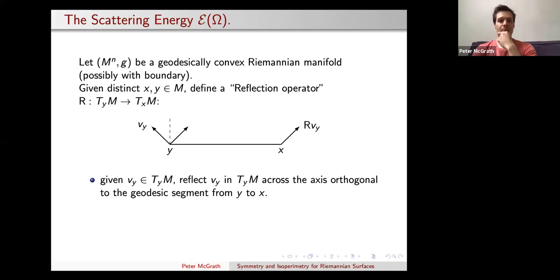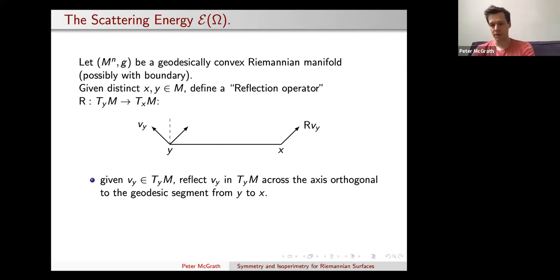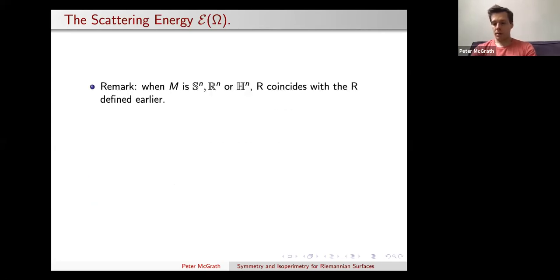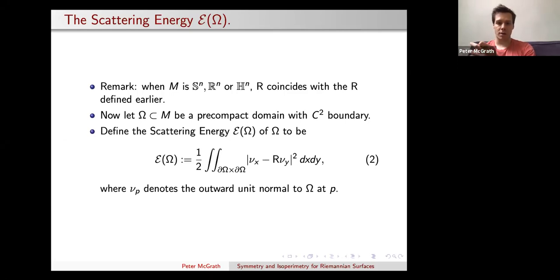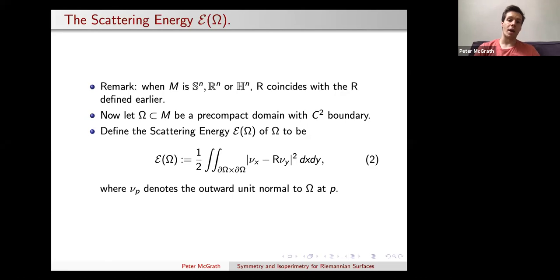I'd like to mimic the same construction and define this reflection operator. Given a distinct pair of points and a tangent vector V_Y in the tangent space at Y, I first reflect across the hyperplane in the tangent space that is orthogonal to the tangent of the geodesic segment connecting X and Y, and then parallel translate along the geodesic segment to get a tangent vector in the tangent space at X. As a side remark, you could imagine parallel translating first and then reflecting — this gives the same definition. This definition also reduces to the one described before when working in canonical symmetric spaces.